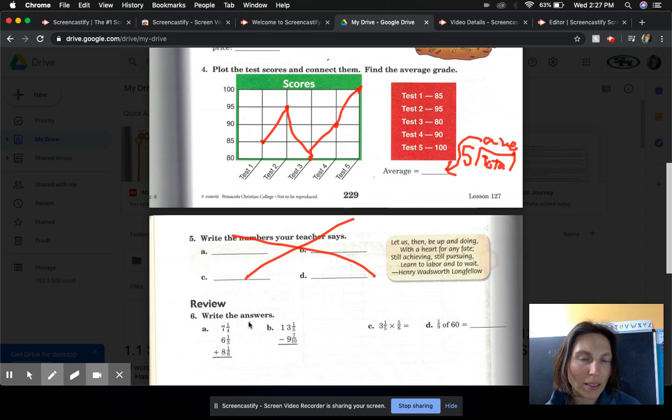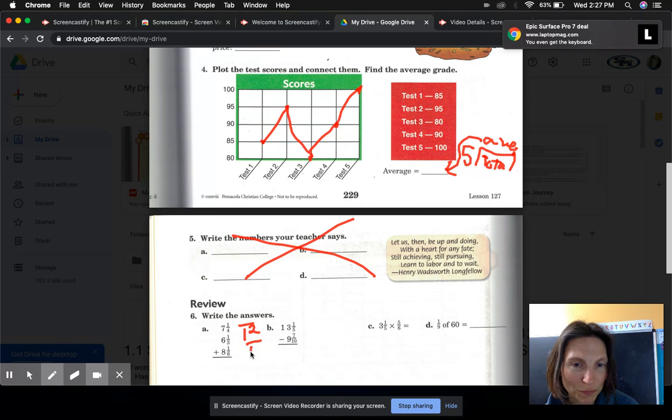All right, let's do 6a together. So we need to first find a common denominator for the denominators 6, 3, and 4. I think 12 is an appropriate one for that. But my pen is writing too large. So 6 times 2 is 12, 1 times 2 is 2. 3 times 4 is 12, 1 times 4 is 4.